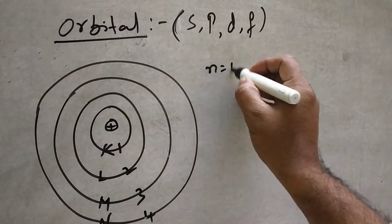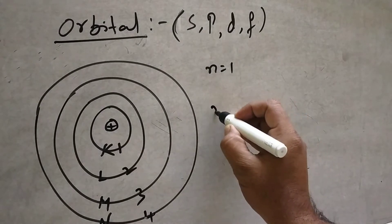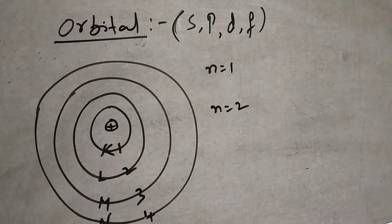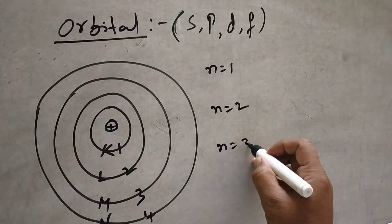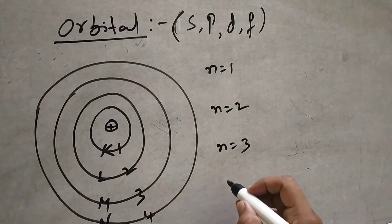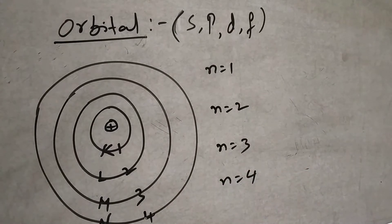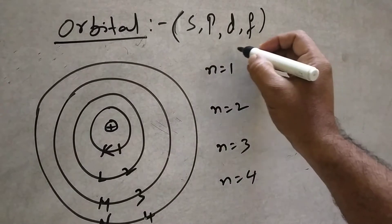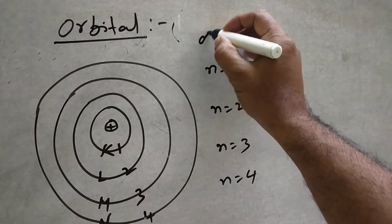If N equals 1, this is the first orbit. If N equals 2, second orbit. N equals 3, third orbit. N equals 4, fourth orbit. This is known as the orbit.